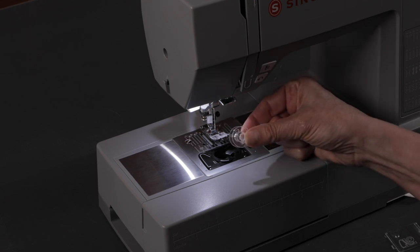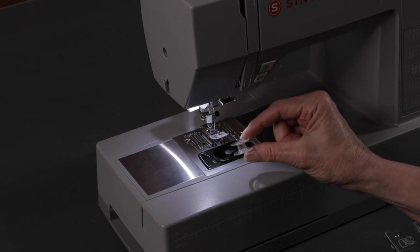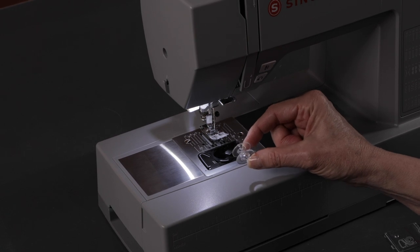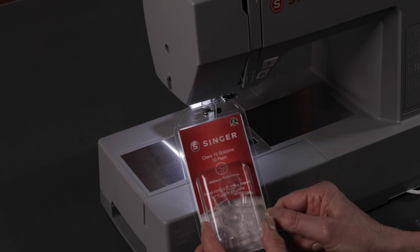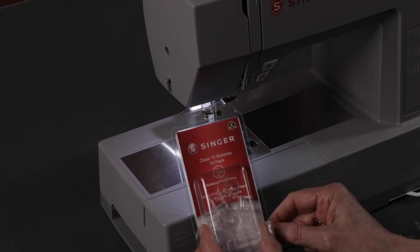These are Singer class 15 transparent bobbins. If you ever decide to buy additional bobbins, make sure that you always look for Singer class 15 transparent bobbins for your machine.